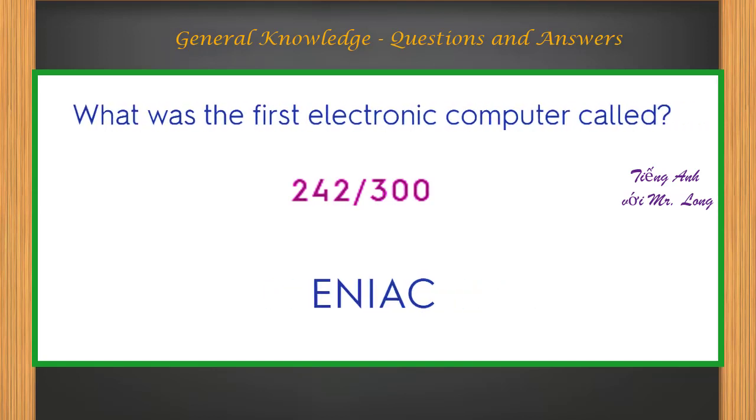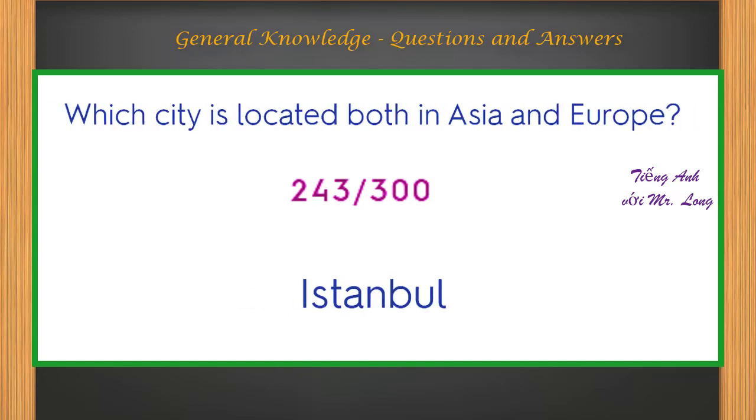What was the first electronic computer called? ENIAC. Which city is located both in Asia and Europe? Istanbul.